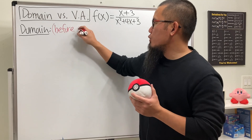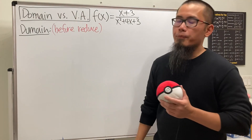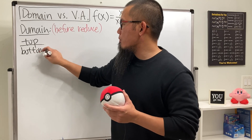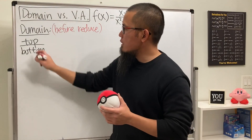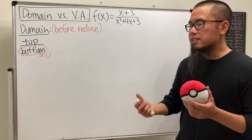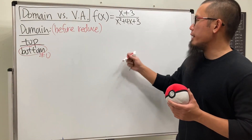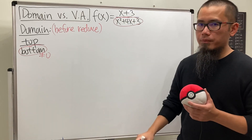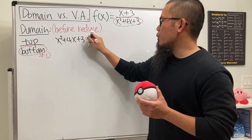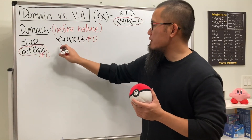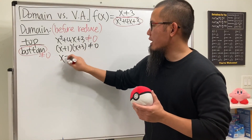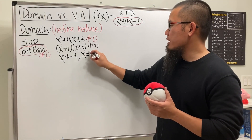This is before you reduce. Whenever we have a rational function — a top over bottom — we cannot have zero on the bottom. So we set the denominator not equal to zero; that's how you find the restrictions, meaning the x values we cannot use. So we look at x² + 4x + 3 ≠ 0, factor it to get (x + 1)(x + 3) ≠ 0, and we find x cannot equal -1 and x cannot equal -3.